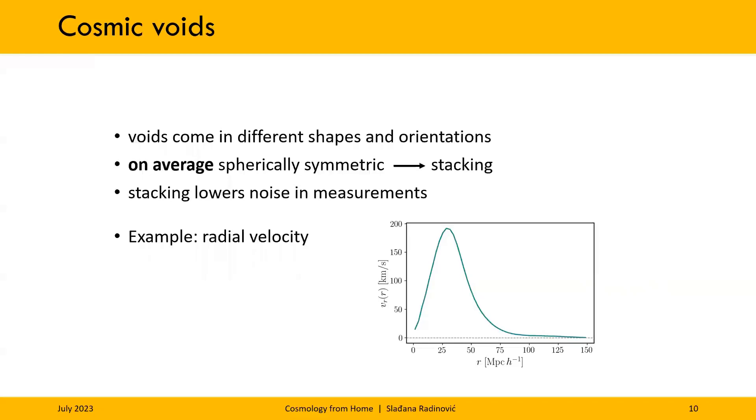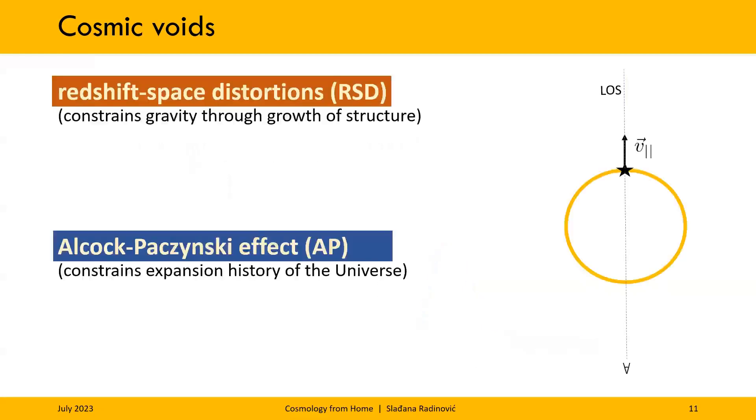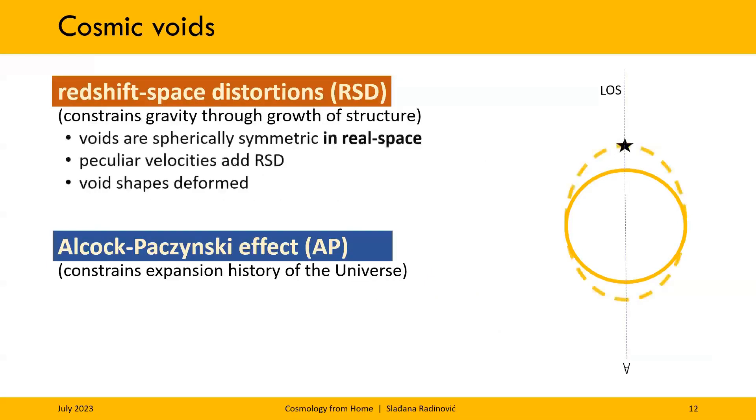Of course, in reality and observations, the spherical symmetry will actually be broken by two observational effects, which are redshift space distortions or RSD and the Alcock-Pachinsky effect or AP. Redshift space distortions are the result of proper motions of galaxies, like the outflow that I mentioned before. So this proper motion interferes with our estimate of redshift and distorts the galaxy field and with it the void. And this deformation happens, of course, along the line of sight.